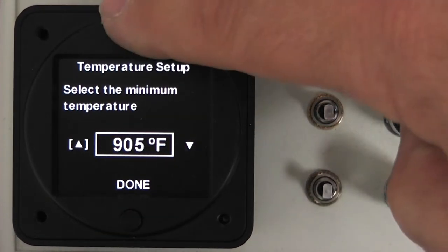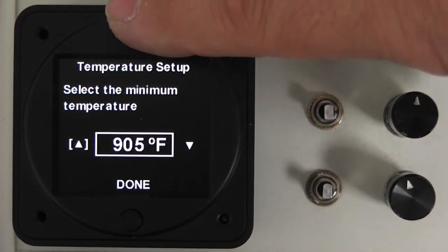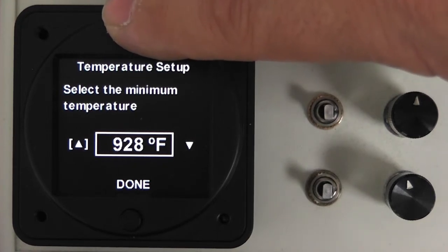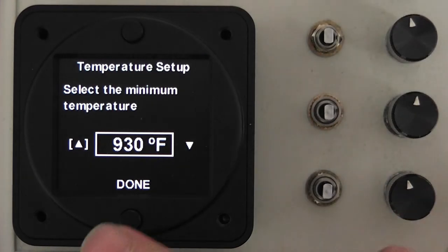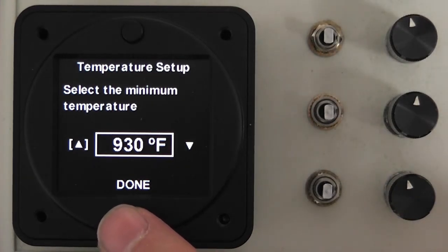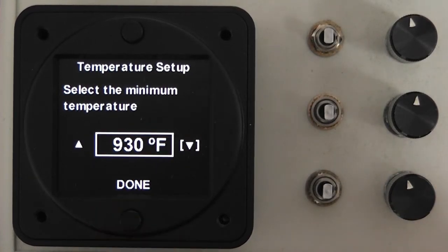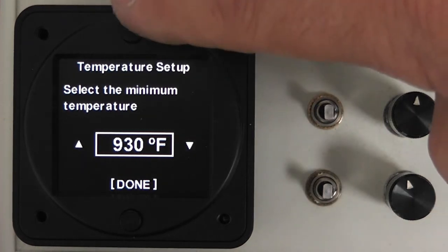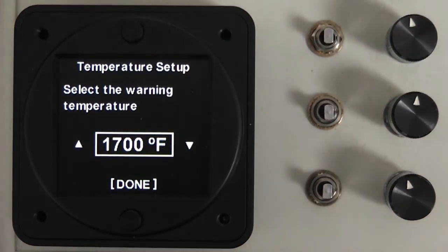We will increase the temperature a little, so select the increase button and then press the top button to reach the temperature that's required. Once the required temperature is displayed, use the bottom button to navigate to done and press the top button to move to the next function.